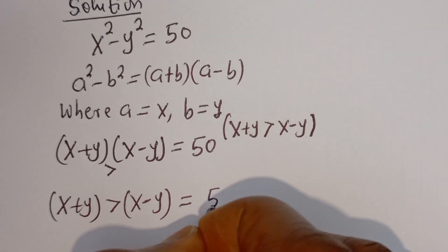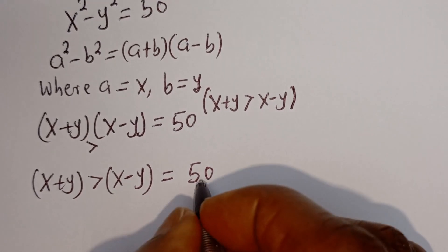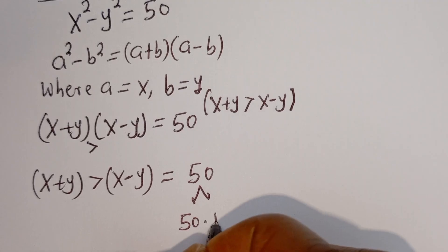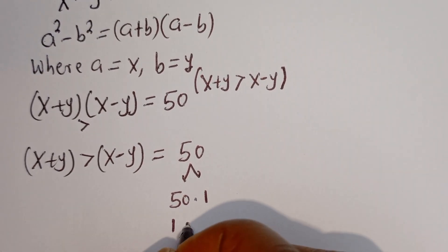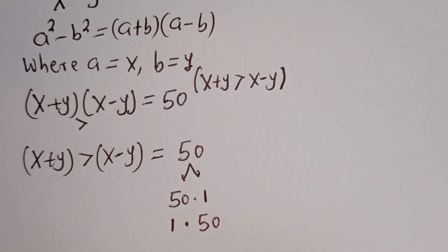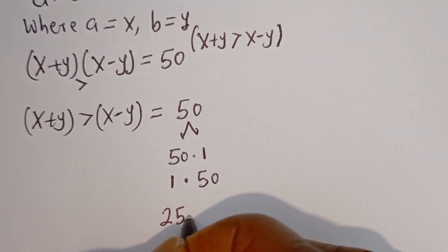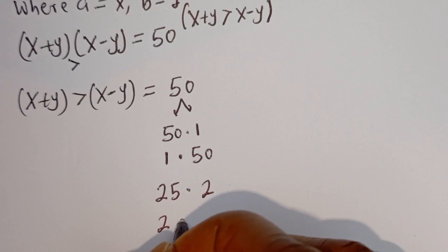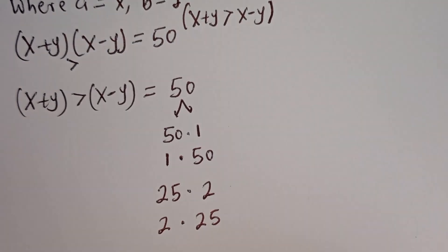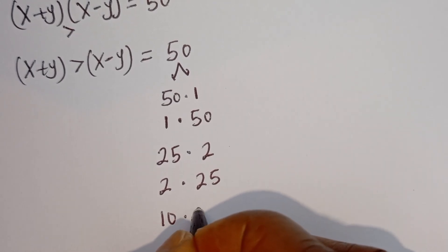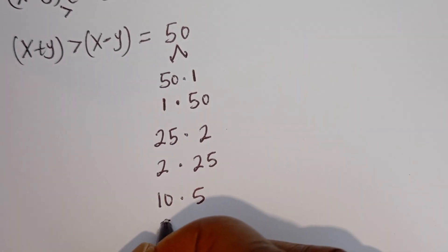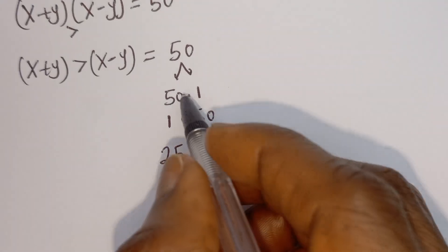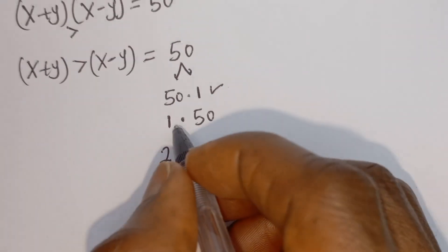We need to look for the factor pairs of 50. 50 is the product of 50 multiplied by 1, then 25 multiplied by 2, and also 10 multiplied by 5. Since x plus y must be greater than x minus y: 50 is greater than 1 — this is true and accepted.